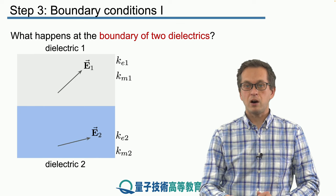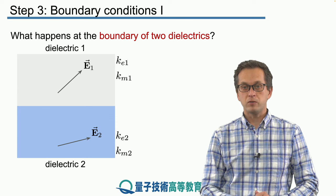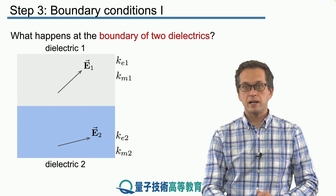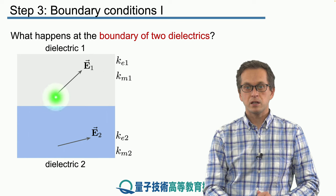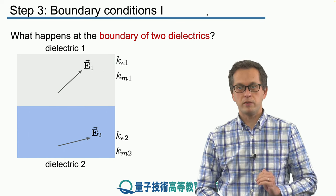And we've got our electric field components of our light radiation in dielectric one. Here this arrow, this vector basically means how the wave is polarized.